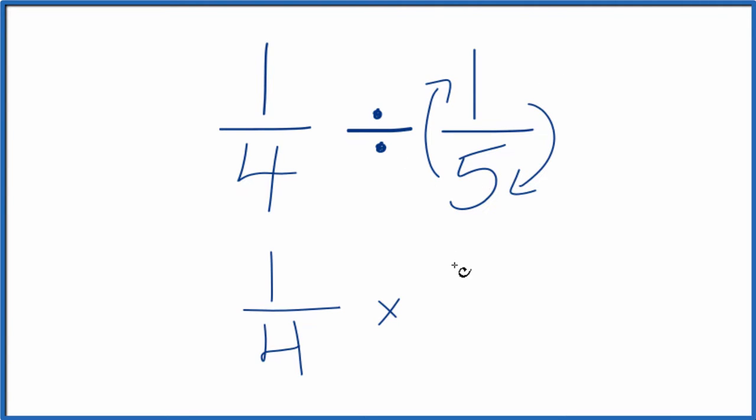So our numerator is going to be 5. Our denominator is going to be 1. So we're multiplying by the reciprocal of 1/5. And 1 times 5, that's 5. 4 times 1 is 4.